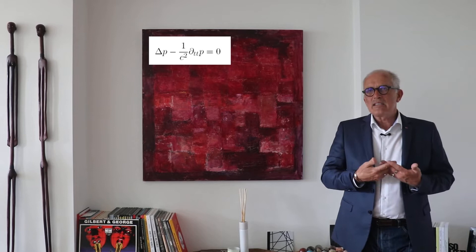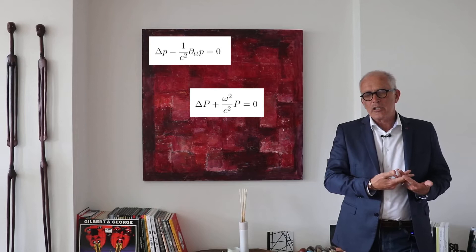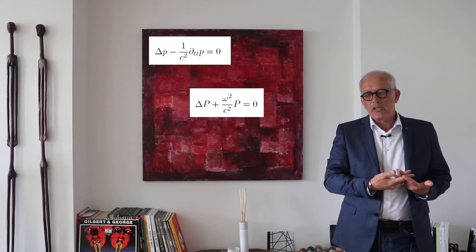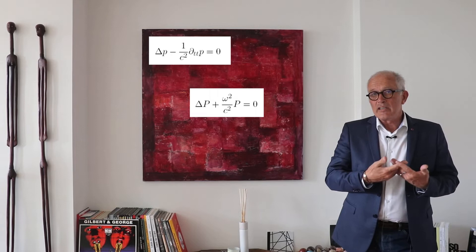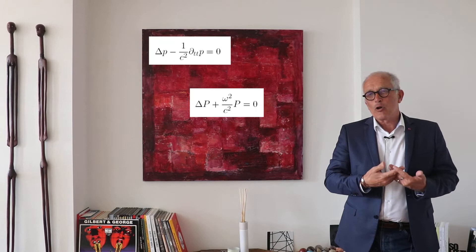So we start with the wave equation and simply take the Fourier transform of that equation. The derivative with respect to space is unchanged, but the derivative with respect to time gives us a coefficient omega squared, so that we end up with an equation where instead of having a factor 1 over c squared, we now have a factor omega squared over c squared. Omega divided by c is the wave number.